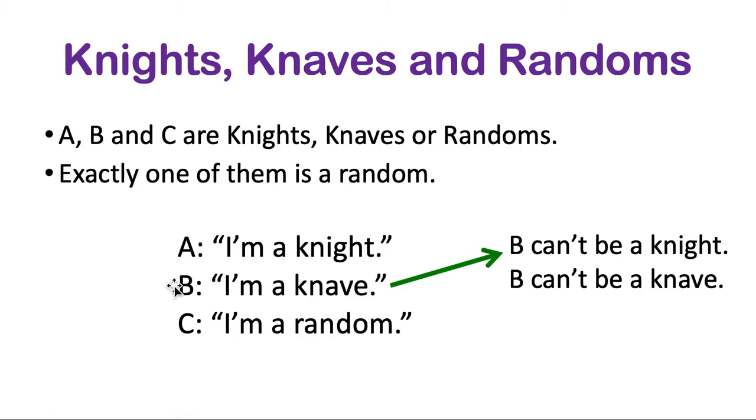So we can infer that B can't possibly be a knight or a knave. And just like the disjunctive syllogism before, if the knight is impossible, the knave is impossible, then B has to be a random. Ah, so we do have our solution. The answer to the first question was the random is B. We have enough information.